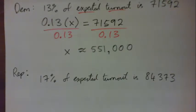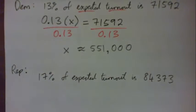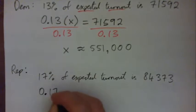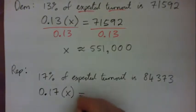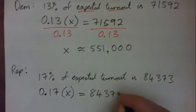You can use the calculator if you want. All right, so 17% is 0.17. 'Of' means multiply. Expected turnout is X, that's what we're looking for, equals 84,373.